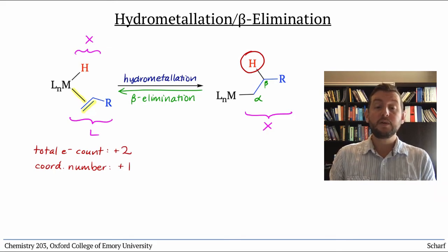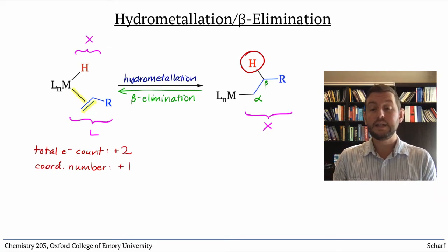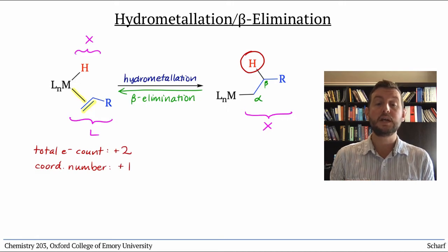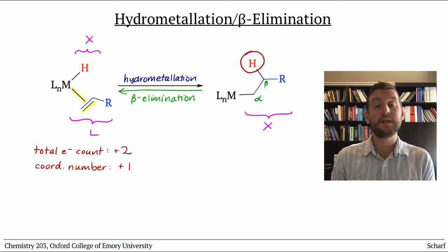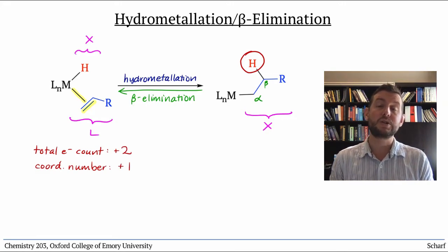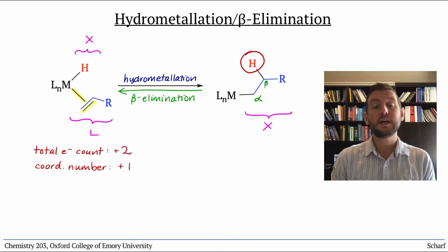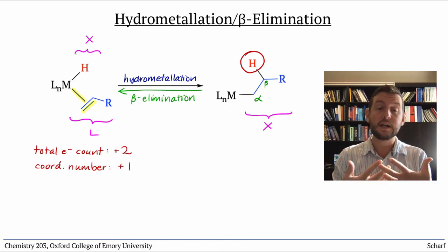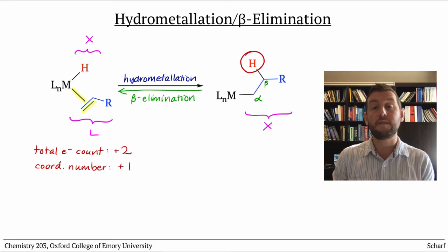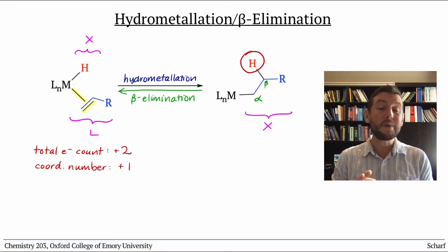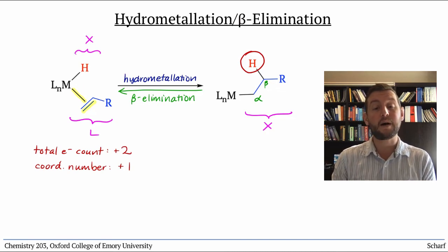The reactions of transition metal complexes that you've learned—ligand association, dissociation and exchange, oxidative addition, reductive elimination, and transmetallation, and migratory insertion and beta elimination—can be stitched together in various sequences that allow a host of otherwise impossible reactions to occur, especially carbon-carbon bond formations.